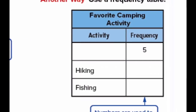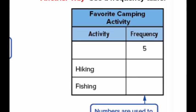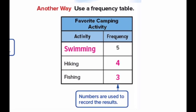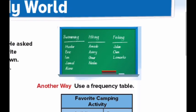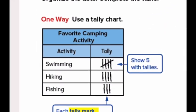Another way is by using the frequency table. We have missing information in this table that we need to fill in. Under frequency, we write the number of scouts. Five scouts voted for swimming, so the activity is swimming. For hiking, four scouts; fishing is three. We can fill this frequency table either by the original information or by using the tally chart.